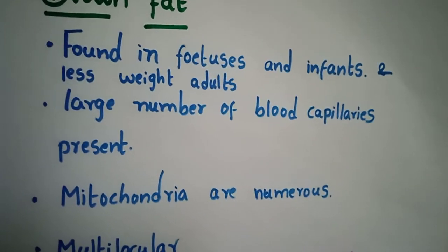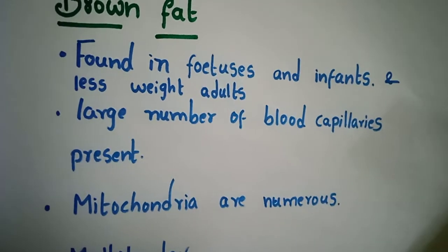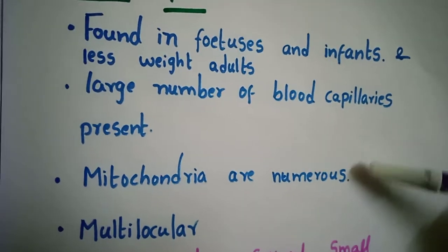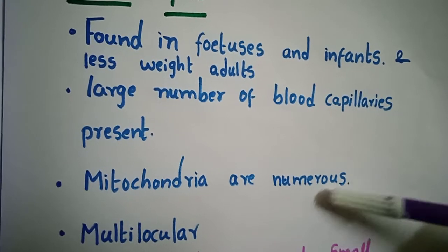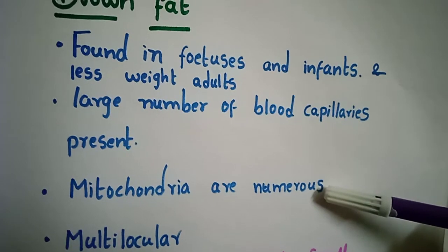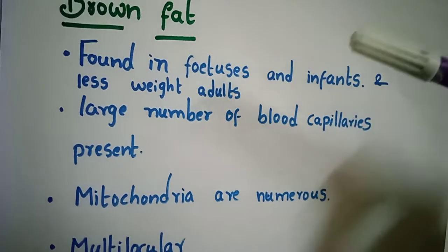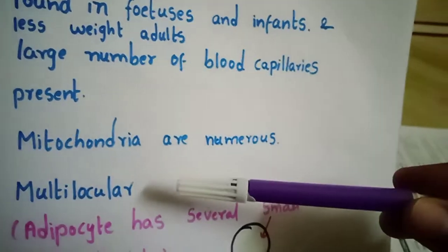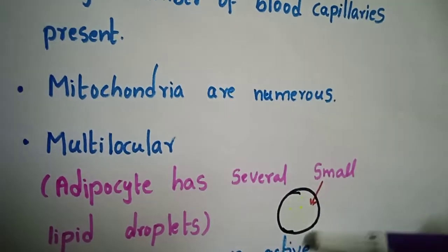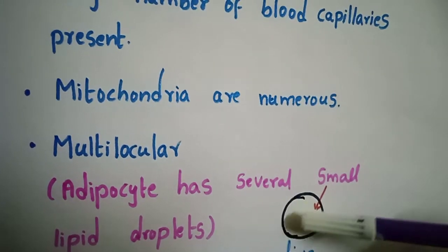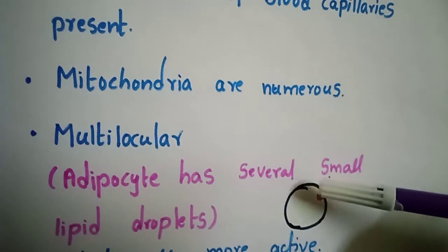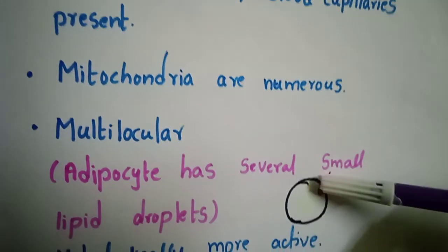A large number of blood capillaries are present in brown fat. Mitochondria are numerous, and due to these numerous mitochondria, the brown fat has a brown color. It is multilocular — this adipocyte contains several small lipid droplets, which is why it is called multilocular.